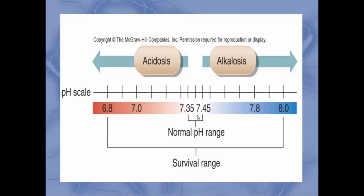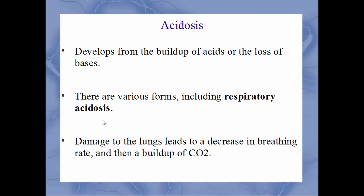The normal blood pH range of 7.35 to 7.45 is illustrated graphically. Anything lower is acidosis; anything higher is alkalosis. In general, a pH below 6.8 or above 8.0 is likely incompatible with life, as these represent major changes in body chemistry and metabolism. Acidosis is created when there is a buildup of acids or a significant loss of bases.